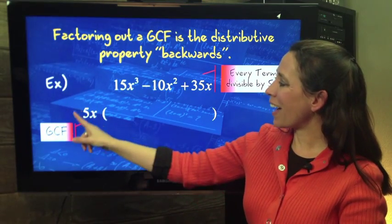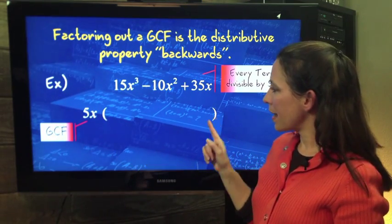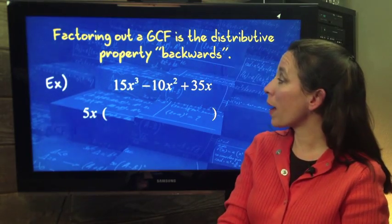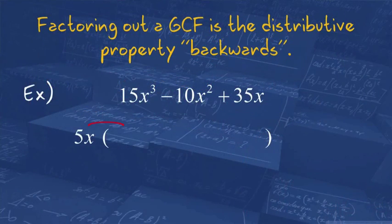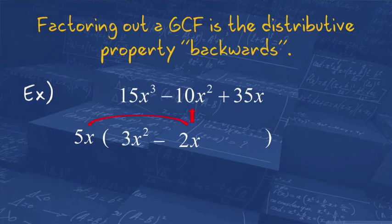Notice the GCF is on the outside of the parentheses, and now we're going to do the distributive property backwards. So we need to figure out 5X times what term would give us 15X cubed? Well, 5 times 3 and X times X squared, so we have 3X squared. 5X times what will give us a negative 10X squared? Negative 2X. And last, 5X times what would give us 35X? Good. A positive 7.